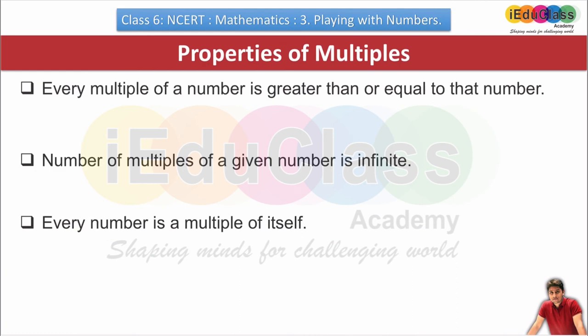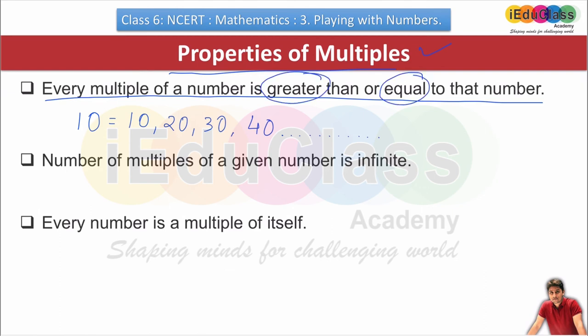The next topic is properties of multiples. What is the first property? Every multiple of a number is greater than or equal to the number. Like in factors, what was there? One or the number or smaller than the number. For example, 10. Multiples of 10 start from 10: 10, 20, 30, 40, and they are unlimited. And they will always be greater than it.